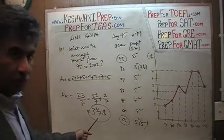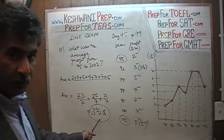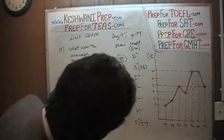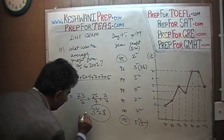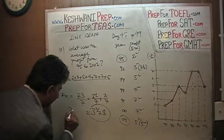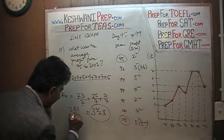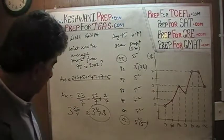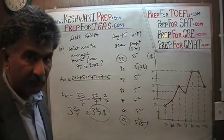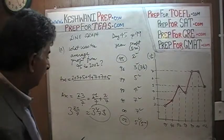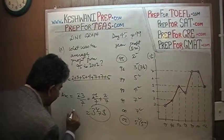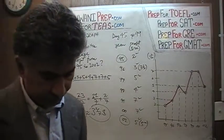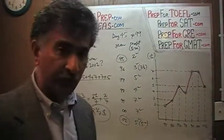Now if you wanted to round this, we can approximate 2 divided by 7 as 2.1 divided by 7, which gives us 0.3. Because 2.1 divided by 7 is 0.3. So it's approximately 3.3 million dollars. 3.3 million dollars is the approximate average profit. So that was question number one.